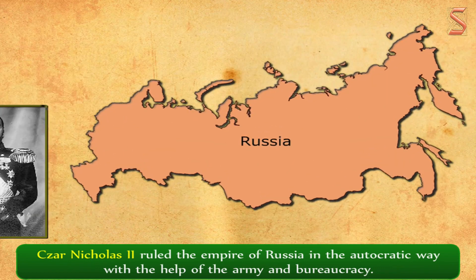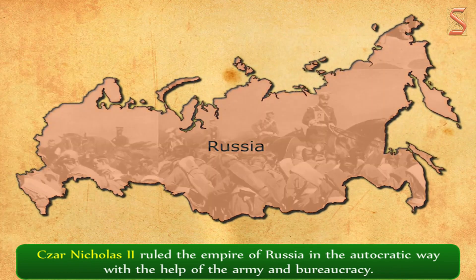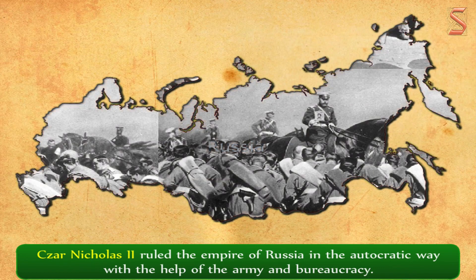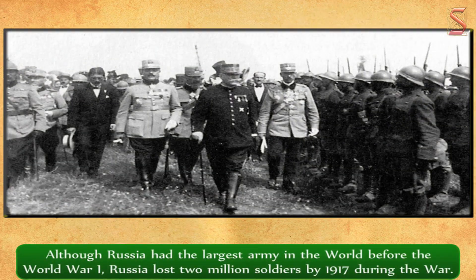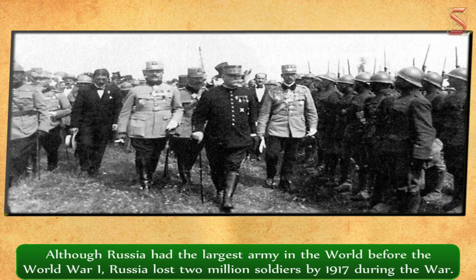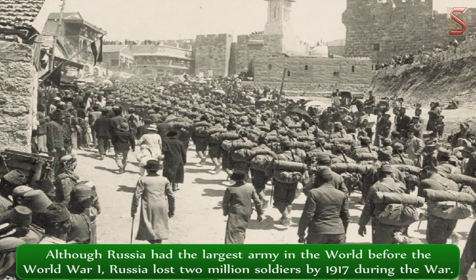Russia suffered greatly due to the world war. Although Russia had the largest army in the world before World War I, Russia lost 2 million soldiers by 1917 during the war. In addition to the lives lost, there was a shortage of food in the cities as food was diverted to the war fields.